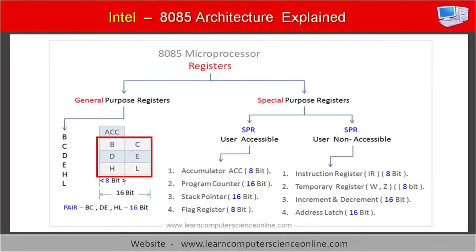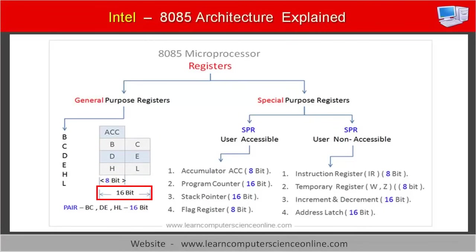These registers can also be combined to form register pairs — such as BC, DE, and HL — to perform 16-bit operations. The 8085 processor also makes use of some special purpose registers during the instruction cycle. Special purpose registers are used to store a specific type of data and perform a special function. Some special purpose registers are accessible to the programmer, while others are not.